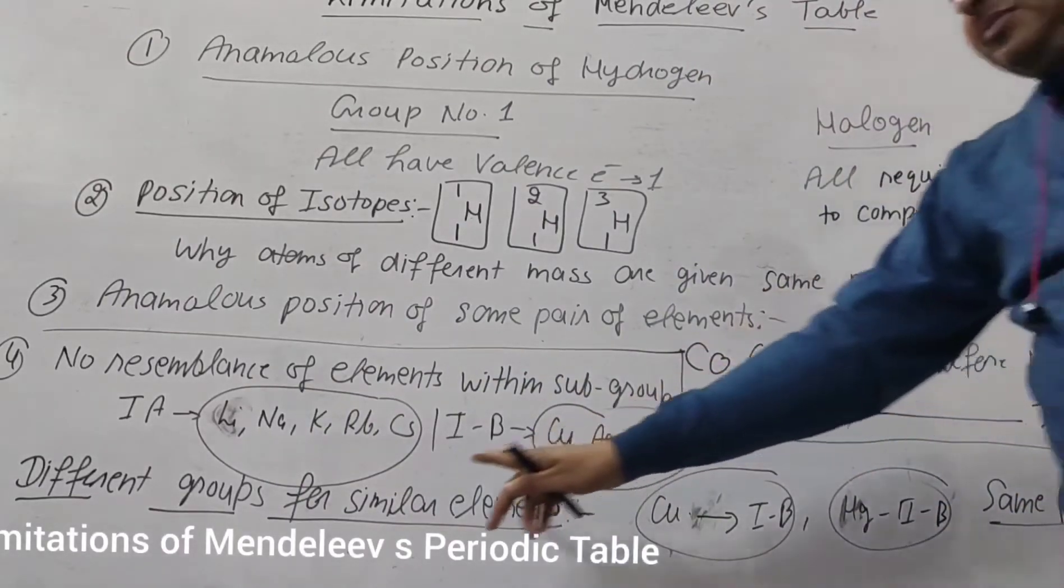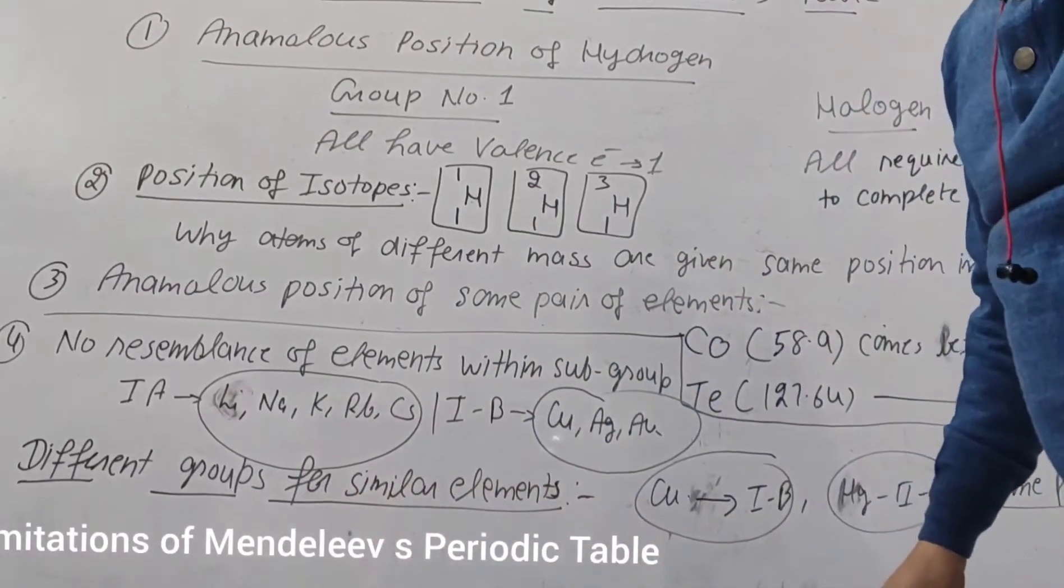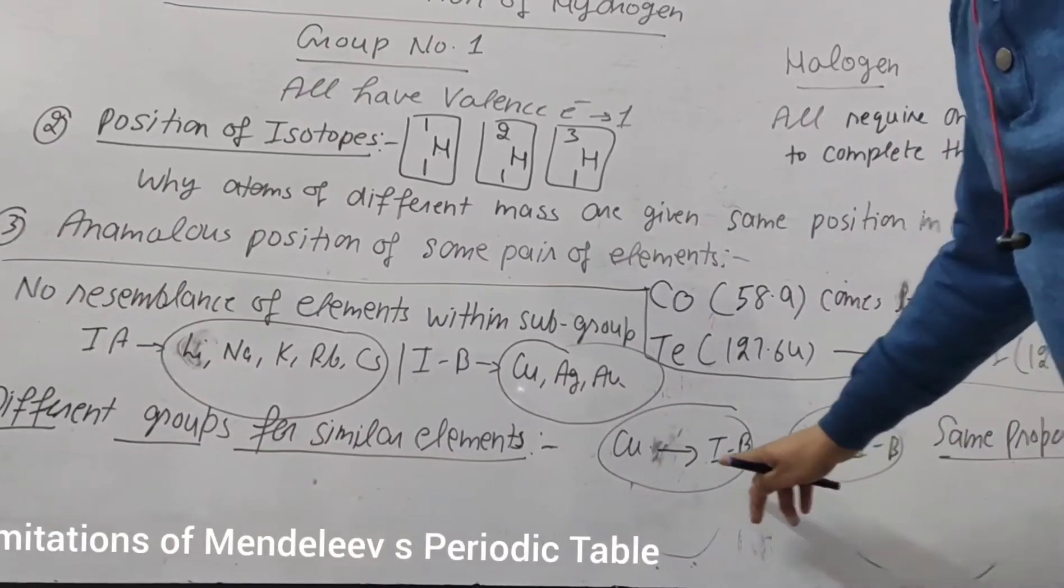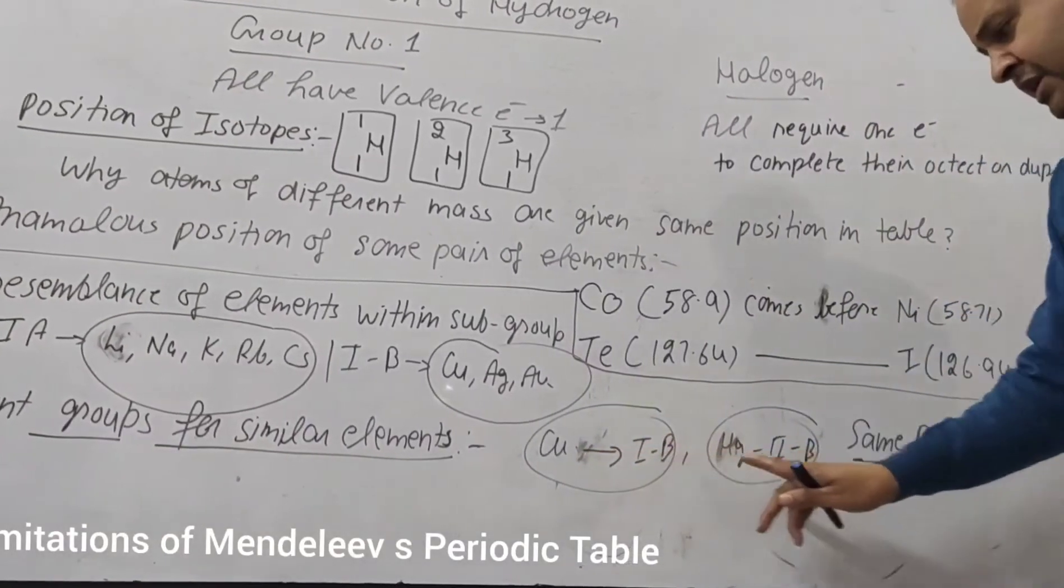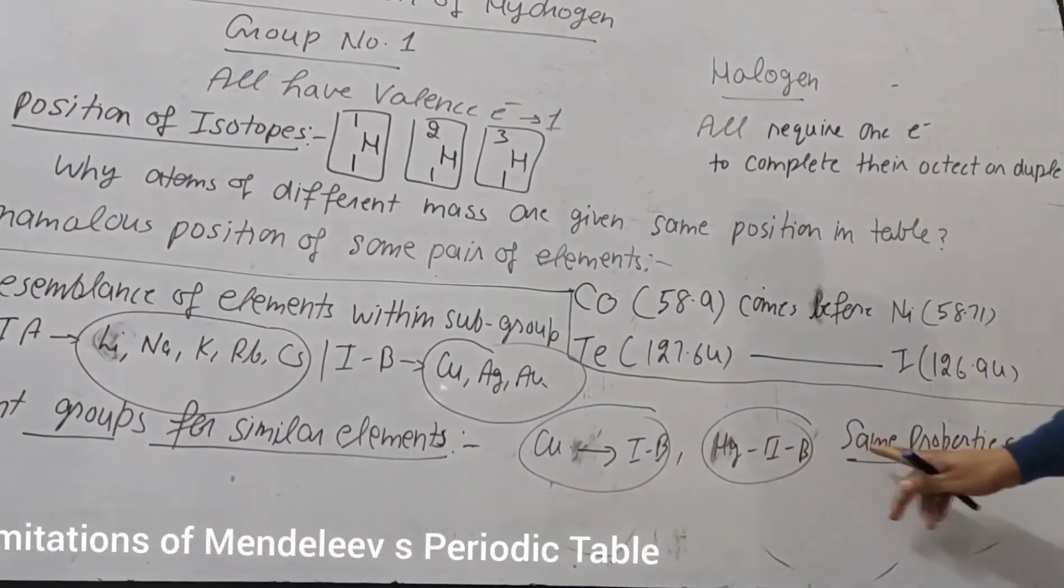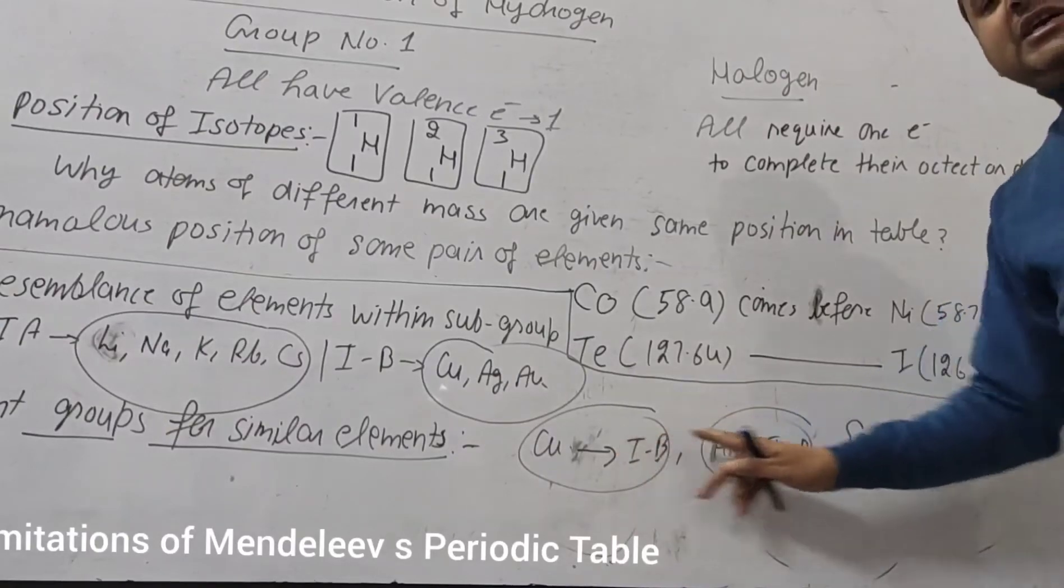Then different group for the similar elements. You can see that Copper is present in first B and Mercury is present in second B. They have the same property. So why they are kept in different groups?